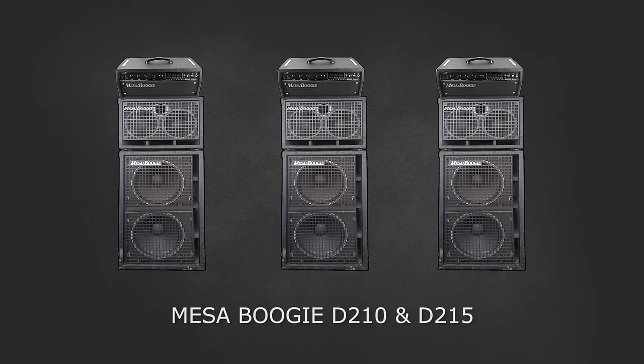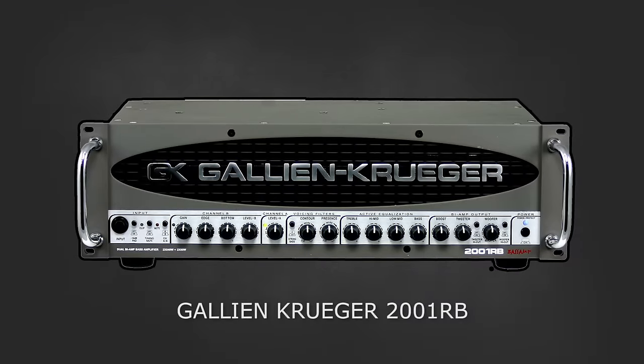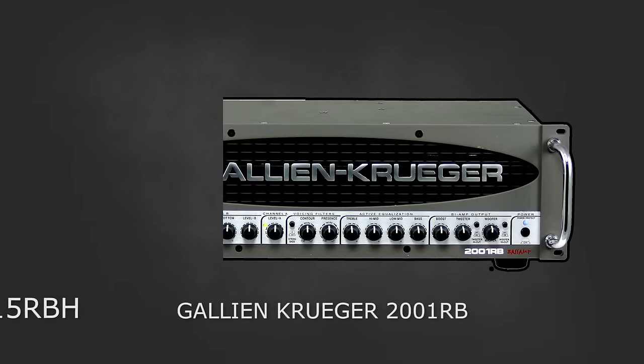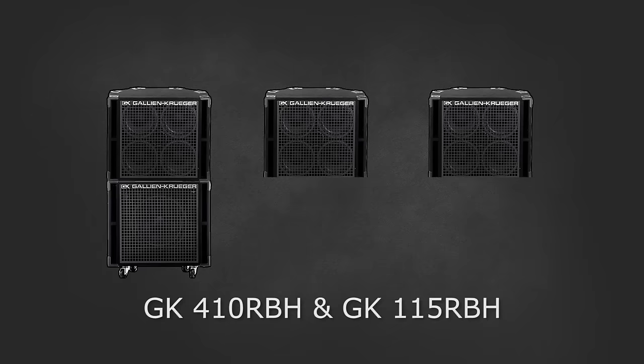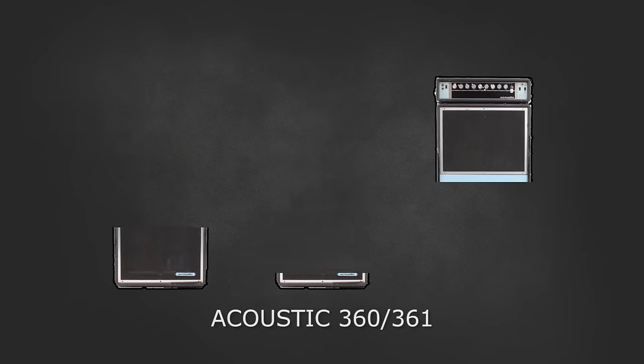Over time he replaced the Buster head with a Gallien Kruger 2001 RB. The same was true for his cabinets, replacing those with three 410s and three 115s. He has stuck with GK since that time but had a short break during 2011's I'm with You tour. Flea was using a reissue of the Acoustic USA 360-361 Bass Rig.